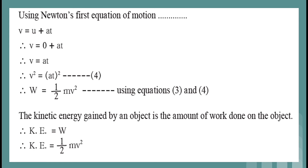Using Newton's first equation of motion, v = u + at. Since u = 0, v = at, so v² = (at)². Therefore W = ½mv². Since kinetic energy equals work done on the object, kinetic energy = ½mv².